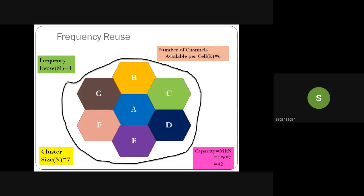With K = 6 channels per cell and N = 7 cells per cluster, and repeating only once (M = 1), the capacity is 6 × 7 = 42 users. So the capacity of this system with frequency reuse equal to 1 is 42 simultaneous users.